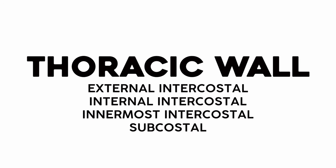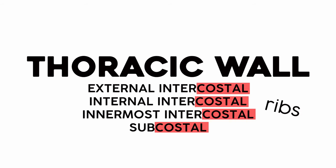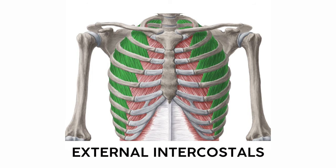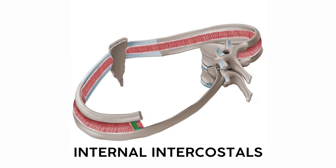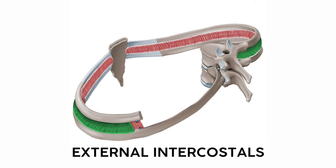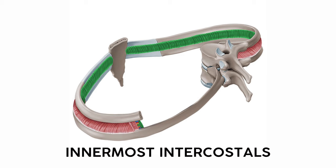As we move on to the thoracic wall, you'll hear a certain Latin term repeated a lot here: costal. In anatomy, costal refers to the ribs. So the intercostal muscles refer to muscles that go between the ribs — hence intercostal. You have two sets: the external intercostals and internal intercostals, both of which connect rib to rib. The internals are deep to the externals. Some professors throw in the innermost costals as a third deeper layer, but you should be fine knowing just external and internal intercostals.